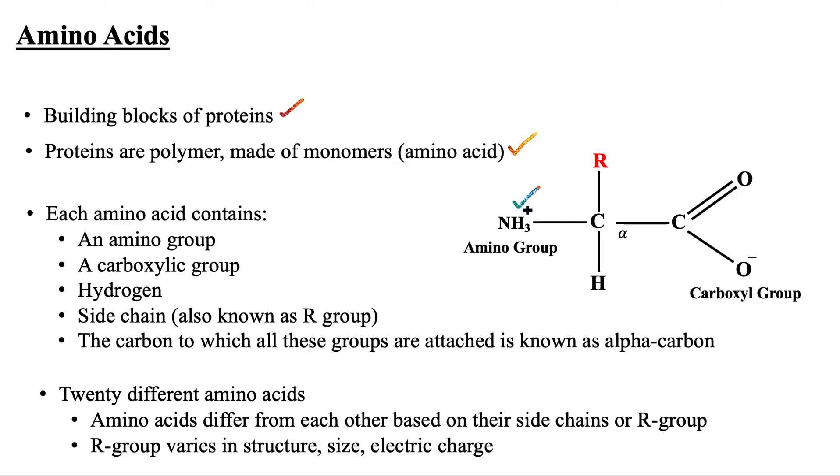which is positively charged at physiological pH, a carboxylic group which is negatively charged at physiological pH, a hydrogen, and a side chain also known as the R group. The carbon to which all these groups are attached is known as the alpha carbon.